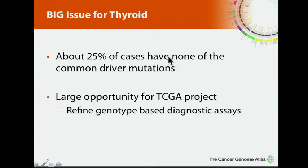There's a big opportunity for the TCGA here. If you genotype differentiated thyroid cancers, you only find one of these driver mutations in about three-fourths of cases — we don't know what those other mutations are. This project is teed up to find them. This is important not just for understanding the cancer biology, but there are already cancer diagnostic tests on the market based on genotype. If we can expand the genotypic universe of papillary thyroid cancer, those tests will get better.